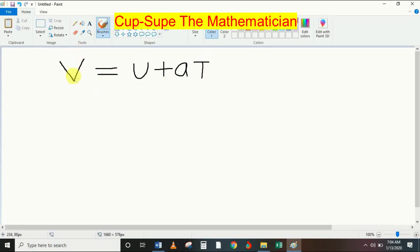At this moment, V is the subject of the formula because V is right here. So it's V equals U plus AT. I'm going to make T the subject of the formula.